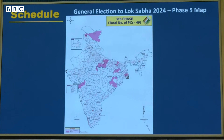Phase 5 will start from 26th April and go till 20th May — date of poll being 20th May — with nomination, scrutiny and withdrawal dates in between. Counting of course is on 4th of June.